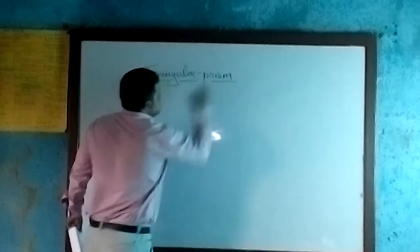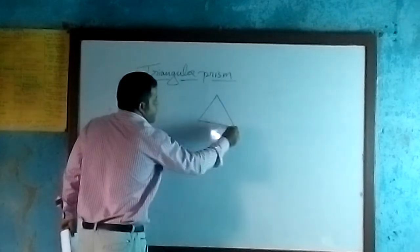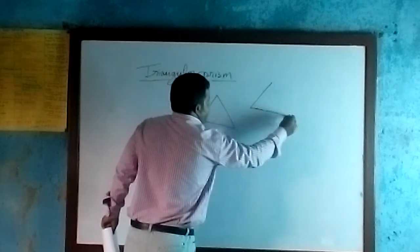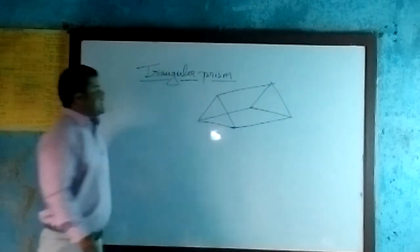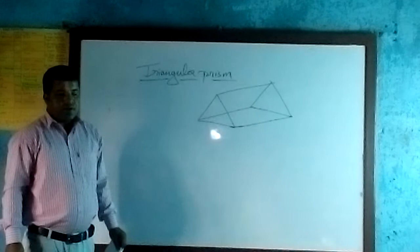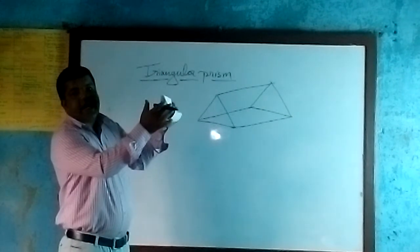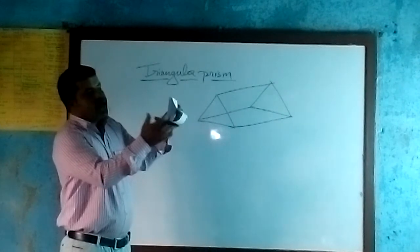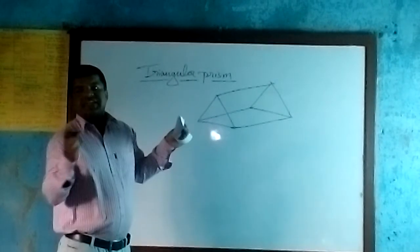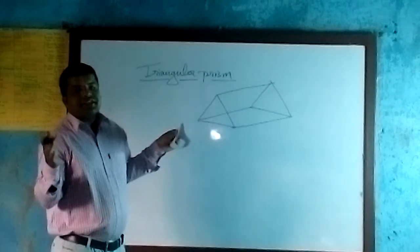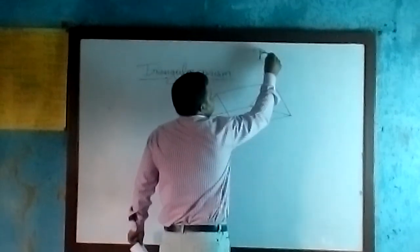I am going to draw the figure of a triangular prism. This shape is called a triangular prism. In this triangle, you can consider this side as a, this side as b, and this side as c. So the perimeter of the triangle becomes a plus b plus c.